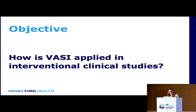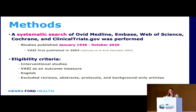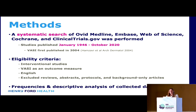We aimed to answer the following question: how is VASI applied in interventional clinical studies? To do this, we conducted a systematic search of all databases for interventional studies that used the VASI from 1946 to October 2020. The VASI was first published in 2004, so there were none before then, but this is a systematic search standard. The eligibility criteria required studies to be interventional, use VASI as an outcome measure, be in English, and be a complete manuscript. We assembled all frequencies and performed a descriptive analysis.